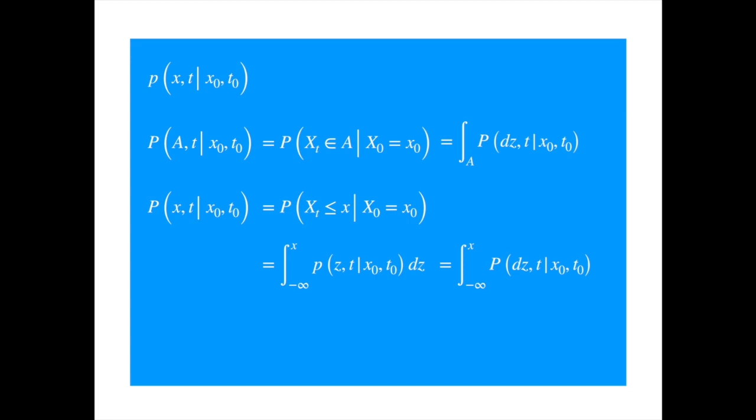Conversely, if you take the derivative of the probability distribution with respect to the forward variable, then you will get the probability density. For the rest of the video, we assume that the probability density function is continuous in all four variables, and also has continuous second derivatives with respect to x and x₀, and continuous first derivatives with respect to t and t₀ — otherwise Newton is not going to be happy.